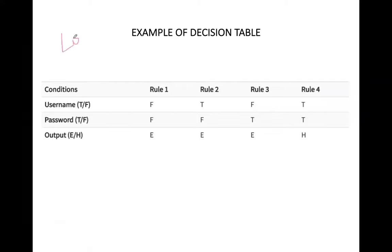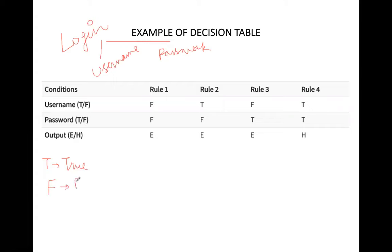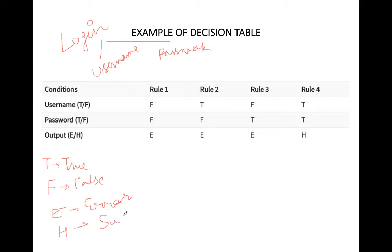Let's discuss an example of the decision table — a simple system login example. For system login you need to pass two things: username and password. T means True (correct), F means False (wrong or incorrect), and E means Error. H means Home Screen, meaning login was successful and the home screen appears — so H represents success.